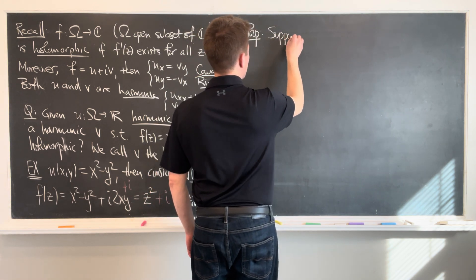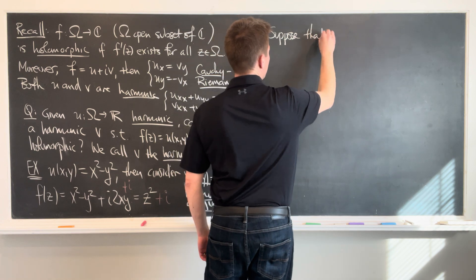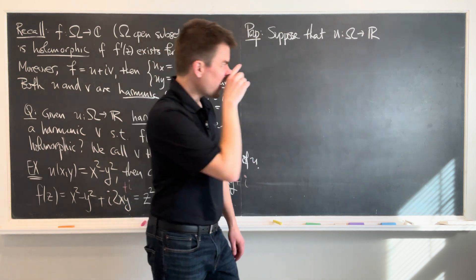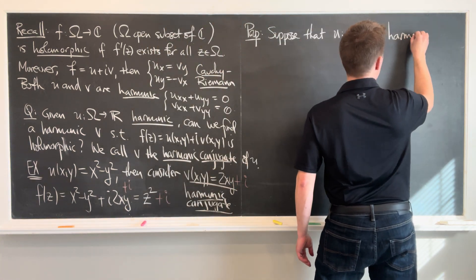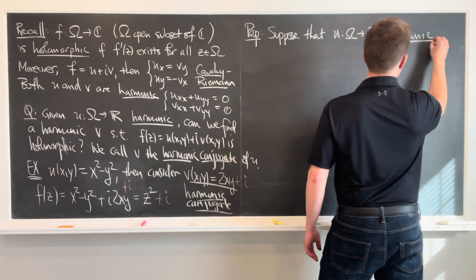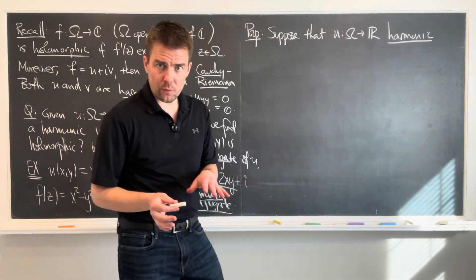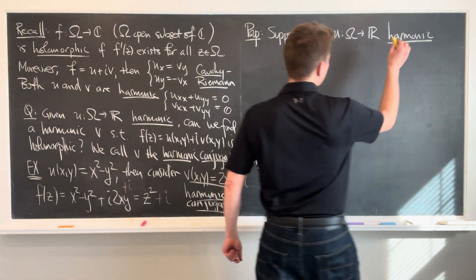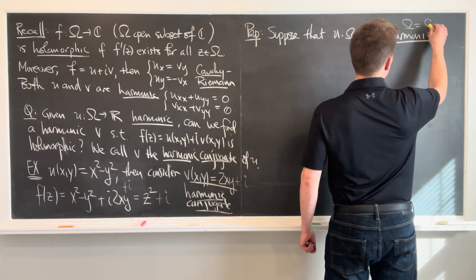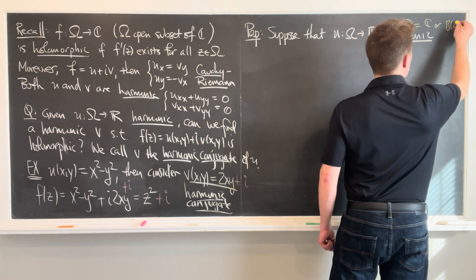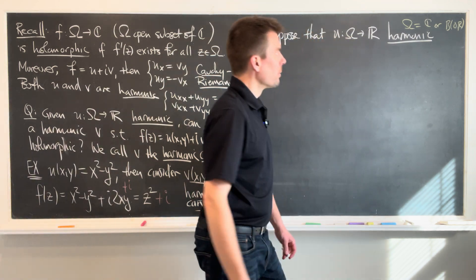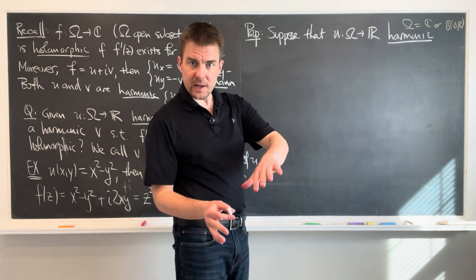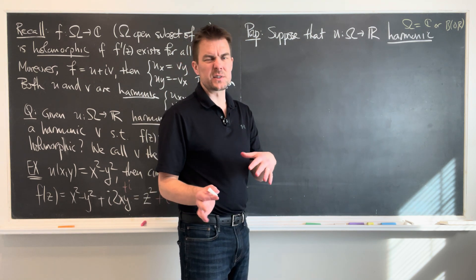So now here's the main proposition. Suppose that u maps omega into R is harmonic. And I'm going to sweep one technical detail under the rug for a few minutes. I need to really assume, I'm going to really think of omega as either C or a ball.